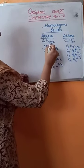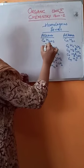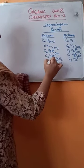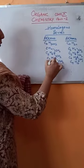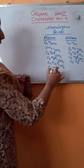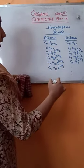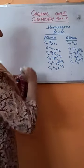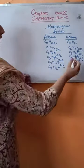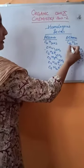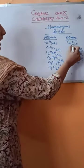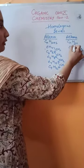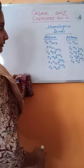That is, this general molecular formula — CₙH₂ₙ₊₂ — is the same for methane, ethane, propane, butane, pentane, hexane, heptane, and all other alkane compounds. Similarly, CₙH₂ₙ is the general molecular formula for all the alkenes.